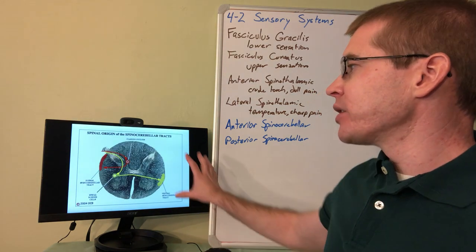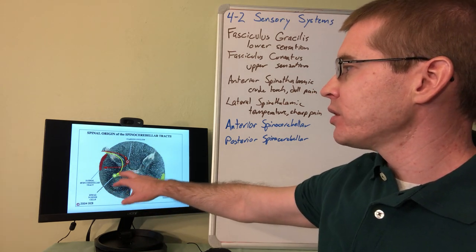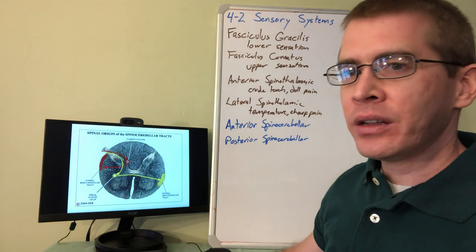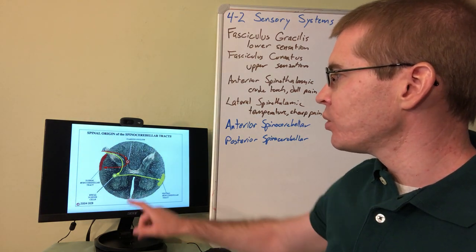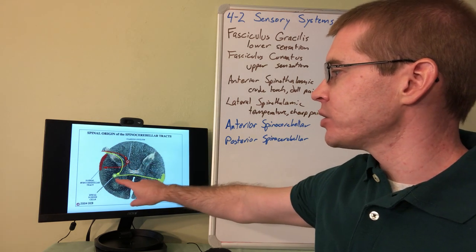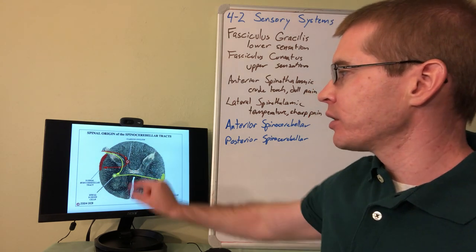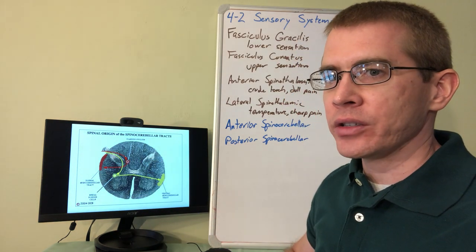So to get a better understanding of where dorsal nucleus of Clark and spinal border neurons are located I'm showing you this slide from a section of the spinal cord. You can see dorsal nucleus of Clark here and the spinal border neurons there closer in the intermediate gray matter in the spinal cord.